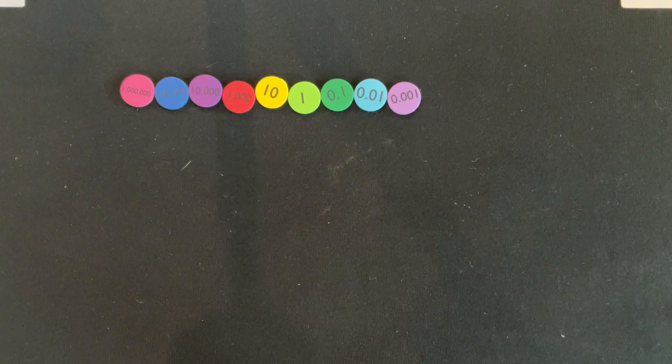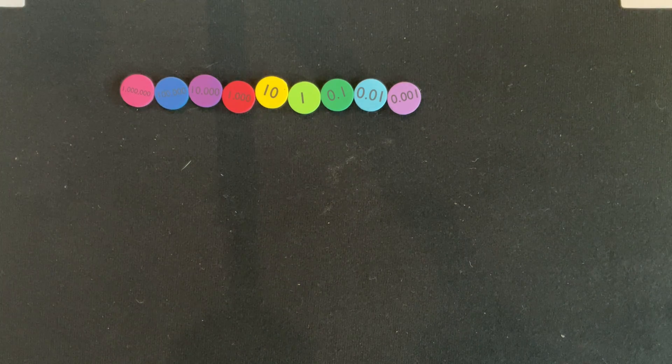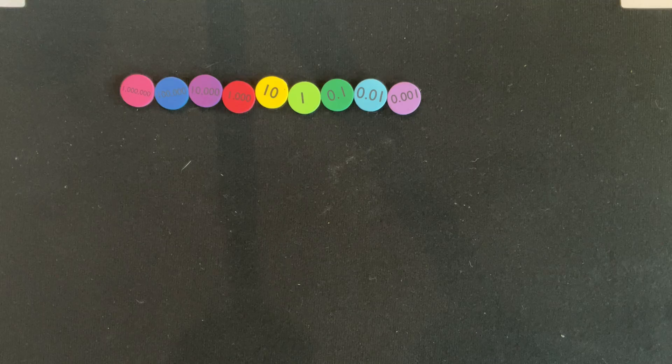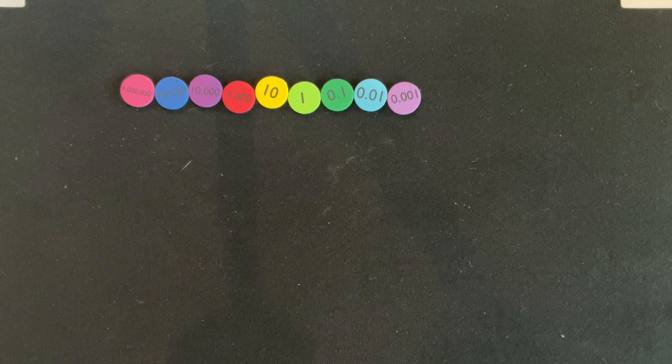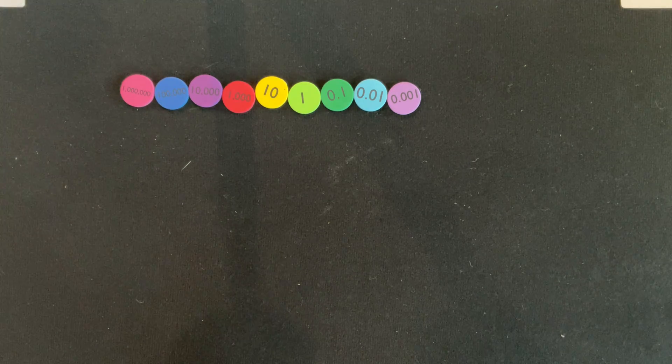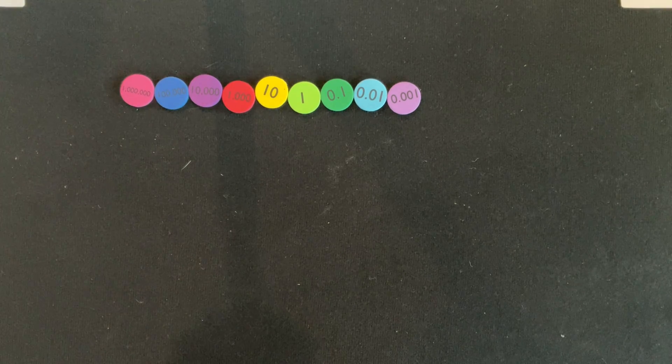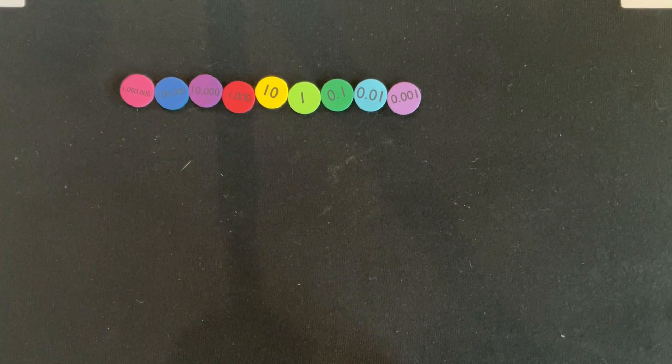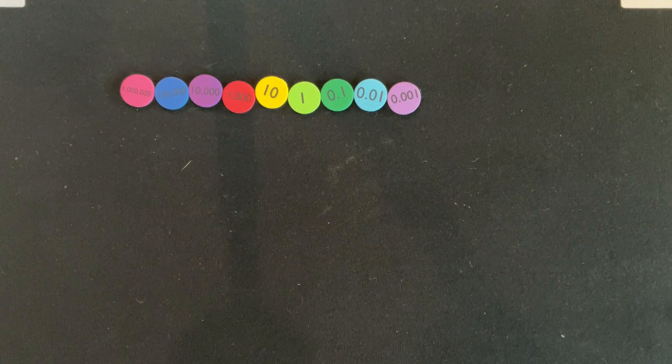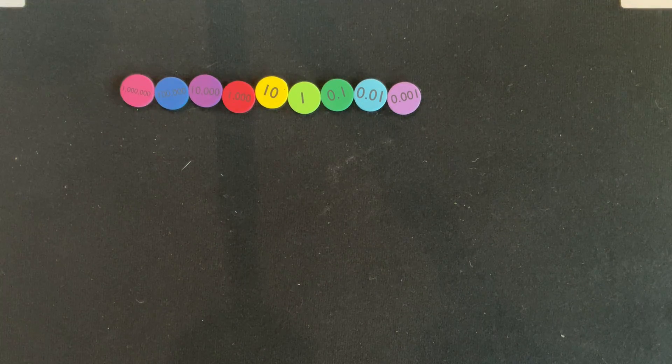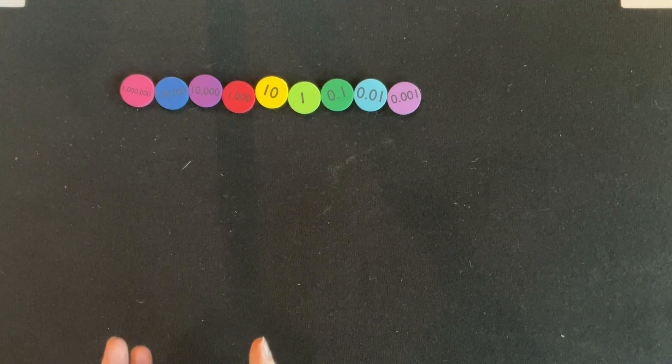You can do grouping by place value. They're going to be able to visually see a bundle of ten or ten tens. You're going to be able to do all of your operations. Operations help kids understand that when you're adding by the standard algorithm, you're just adding by place value: adding your ones, your tens, your hundreds. And if you happen to have a bundle of ten, that's where you would regroup.